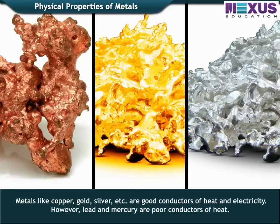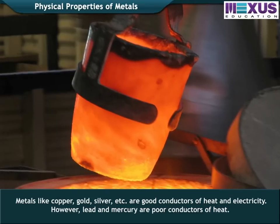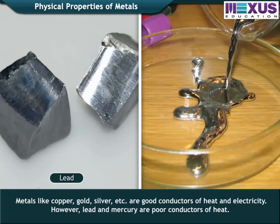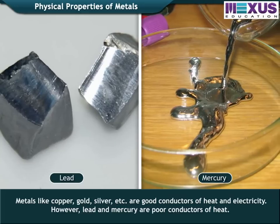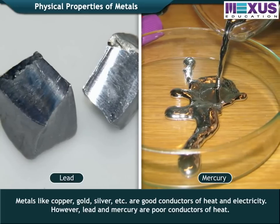Metals like copper, gold, and silver are good conductors of heat and electricity. However, lead and mercury are poor conductors of heat.